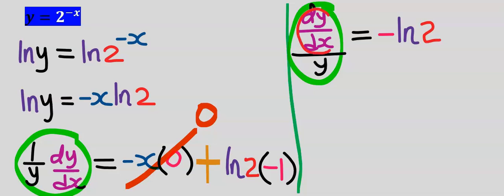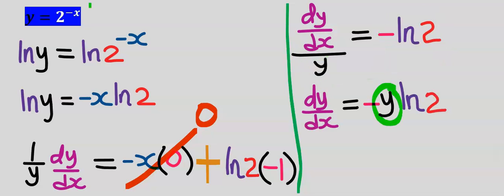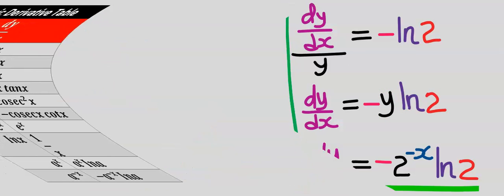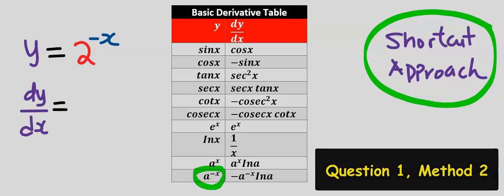Note that dy/dx is one entity. The y at the denominator moves over to the other side and multiplies everything. Next, we replace the value of y from the given question. This gives us our dy/dx.